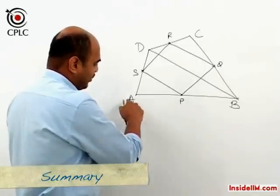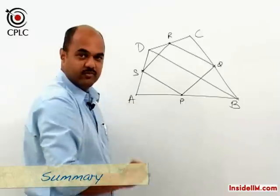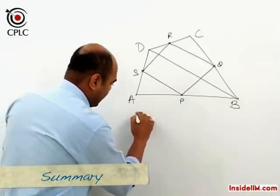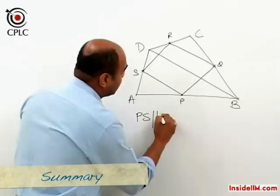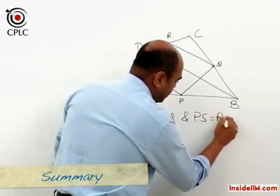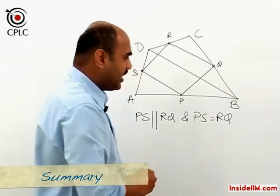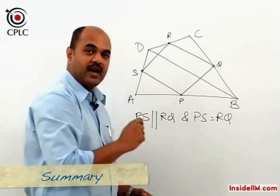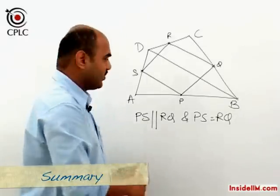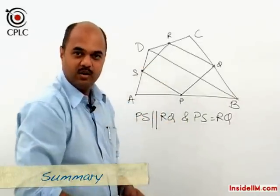Similarly, for triangle ABD, PS is parallel to BD and equals half of BD by the midpoint theorem. Hence PS is parallel to RQ and PS equals RQ. Since one pair of opposite sides in quadrilateral PQRS is both parallel and equal, we can conclude that PQRS is a parallelogram.